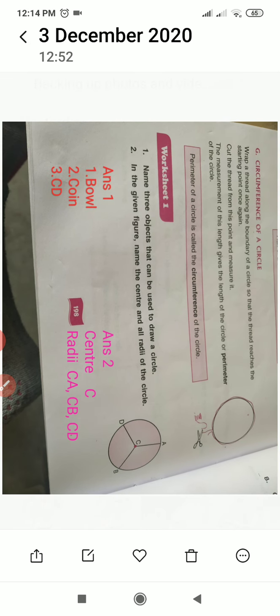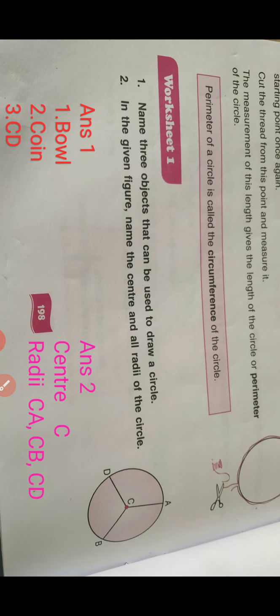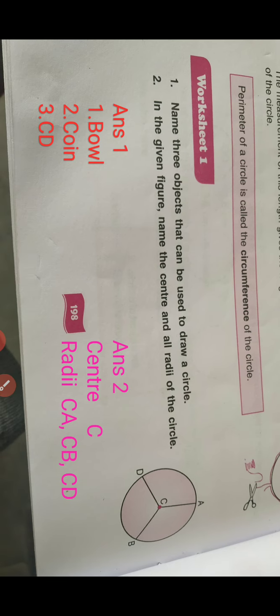Now first sum. Name three objects that can be used to draw a circle. In previous video, I have explained the examples which are circular in shape. With the help of those examples, doing first question. First question. Three objects that can be used to draw a circle.